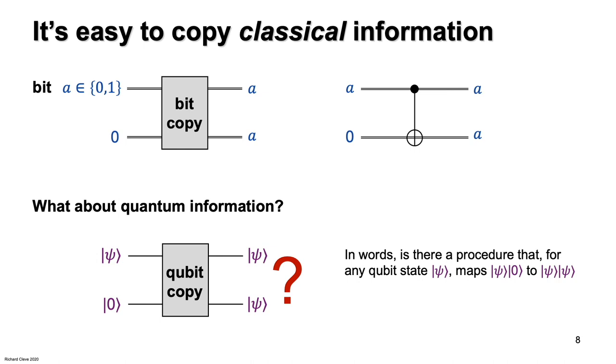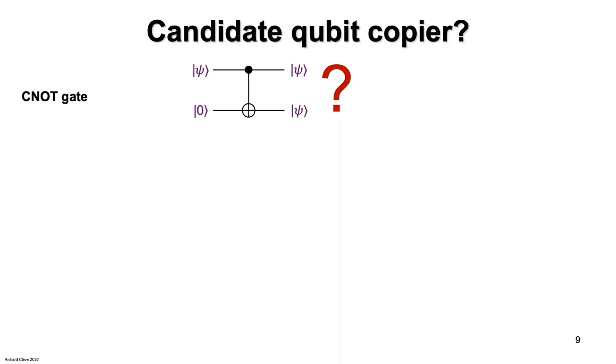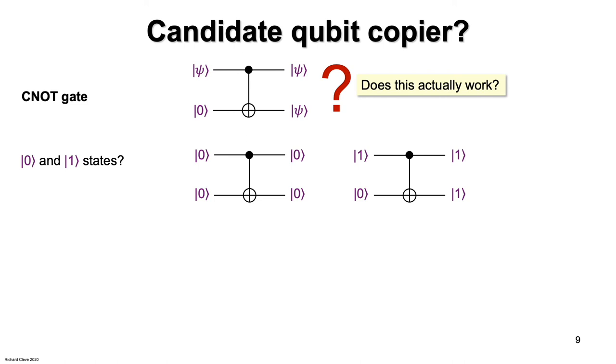Well, here's a candidate copier. Let's try the controlled NOT gate again and see if it works. Let's start as a sanity test. See if it at least works for computational basis states. If the state is ket 0, then you do end up with two copies of ket 0. And for ket 1, yeah, you also end up with two copies of ket 1. So this works for computational basis states. It will produce two copies of a computational basis state. What about other states?